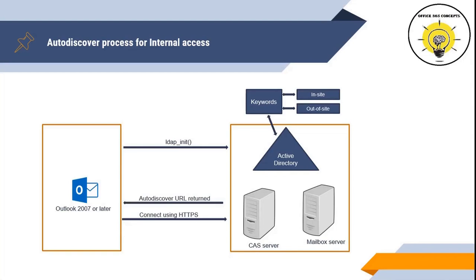Outlook tries to connect to each Autodiscover URL retrieved from the in-site or out-of-site list. The Autodiscover service then queries Active Directory to obtain connection settings and URLs for Exchange services, and returns an HTTPS response with an XML file containing those settings. Finally, Outlook uses the configuration information from the XML file to connect to the Exchange messaging environment.